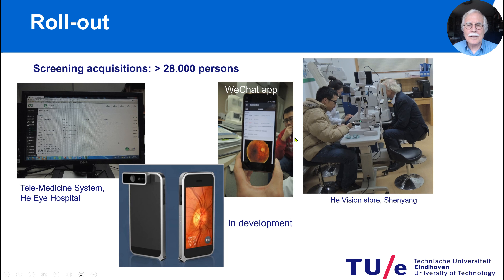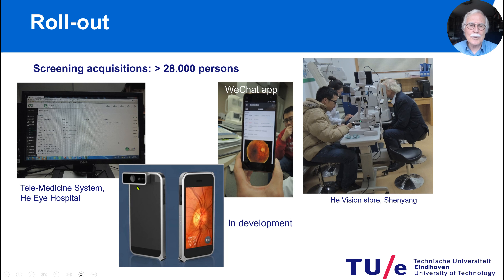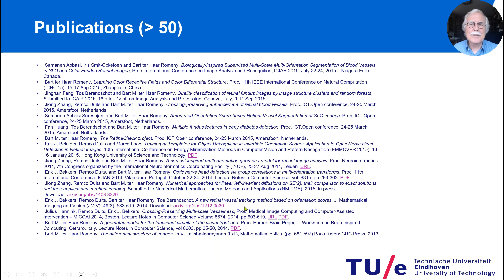What is currently in development is mounting a dedicated camera to a smartphone, which has a flash concentric to the lens. Normally in a smartphone, the flash is outside of the camera, so it's not really suitable — this is still in development. We wrote more than 50 publications.